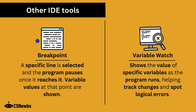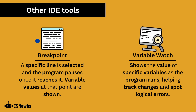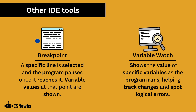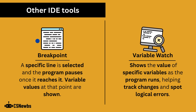The previous four IDE tools are listed in the OCR GCSE specification, but many other tools exist. For example, a breakpoint — this is when a specific line is selected and the program pauses once it reaches it. Variable values can then be shown at that point.